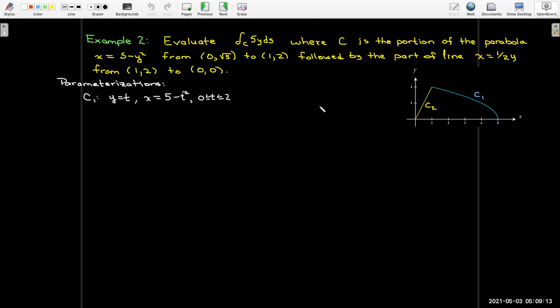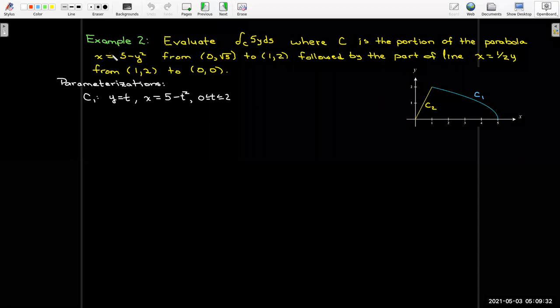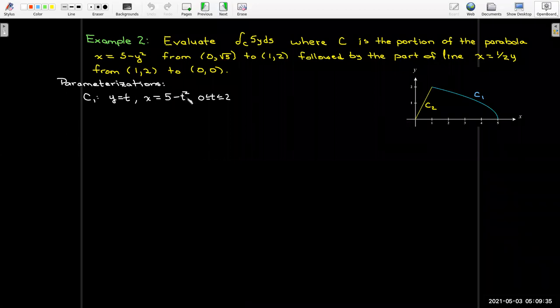How are we going to parameterize these curves? For the parabola, y is the independent variable. x depends on y. So I'm going to set y to be my parameter t. And then by just using this formula, that would tell me that x would be 5 - t^2. I just replace y with t. My bounds on t have to be the bounds on y. I can look at the graph to help me, and I can see that the y values vary from 0 all the way to 2.